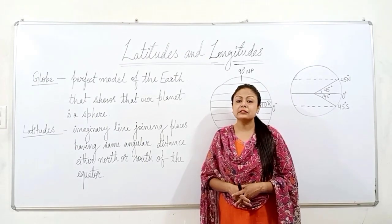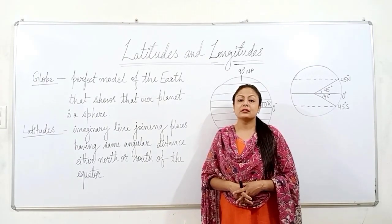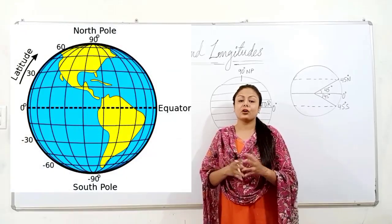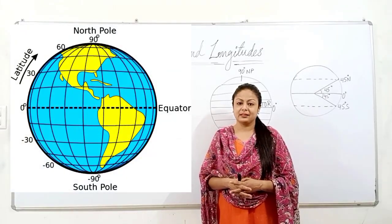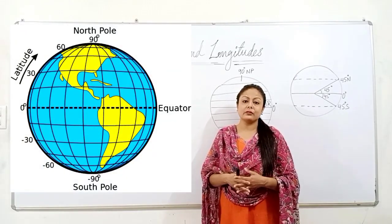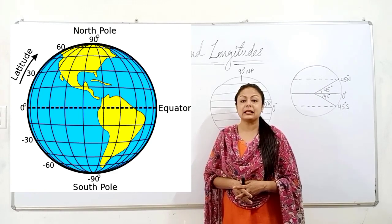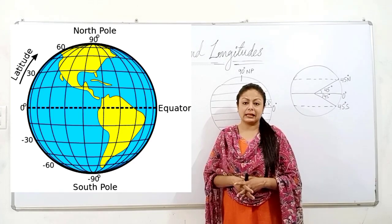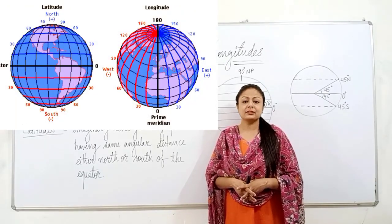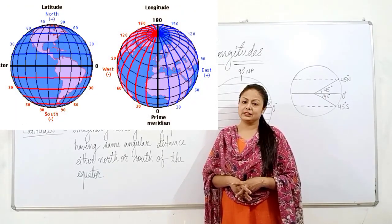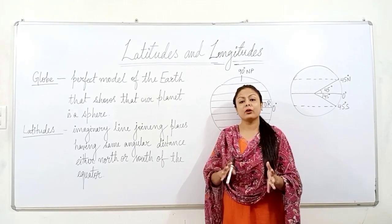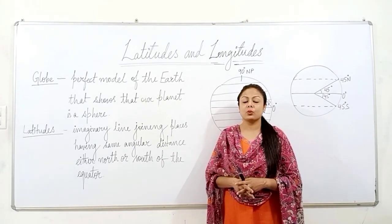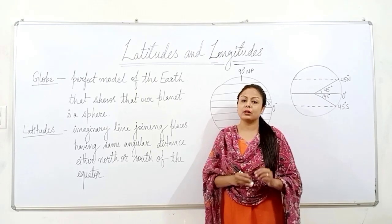But as the globe represents the planet earth, if we try to locate any place on the globe then we need to take help of the grid system — that is earth's grid or geographical grid. And the grid is drawn with the help of imaginary lines, vertical and horizontal imaginary lines known as latitudes and longitudes.